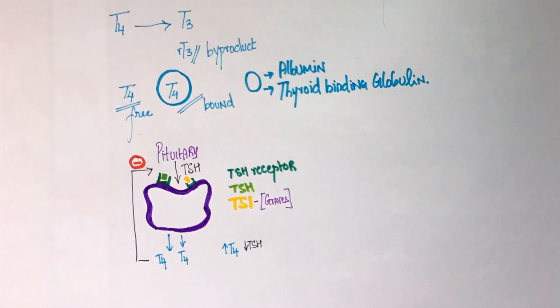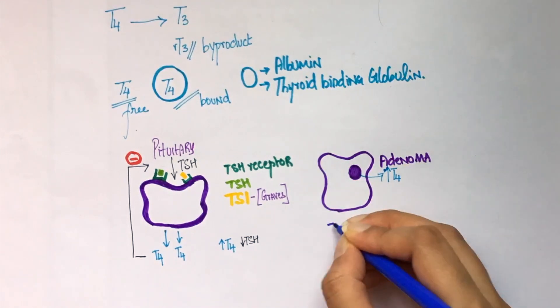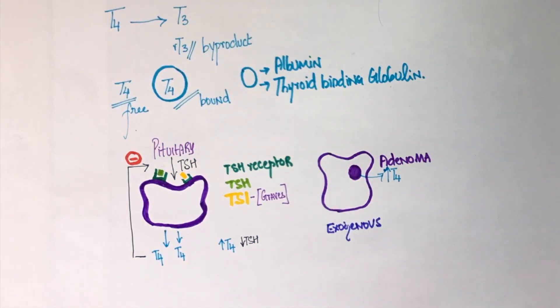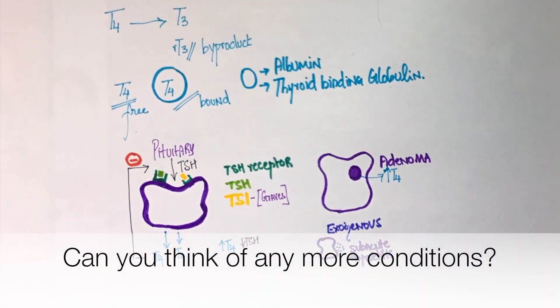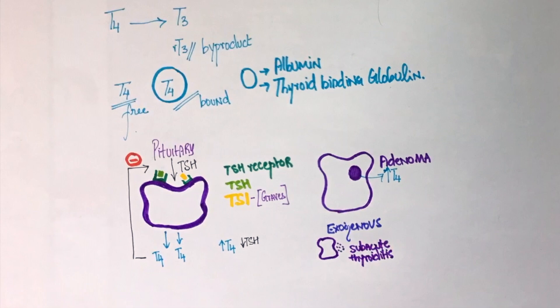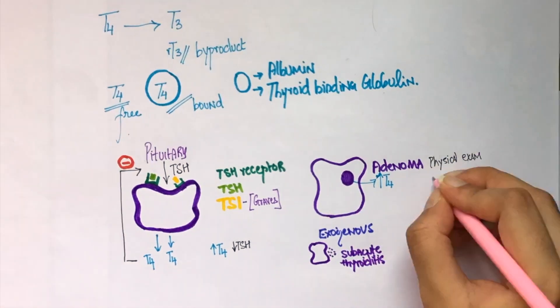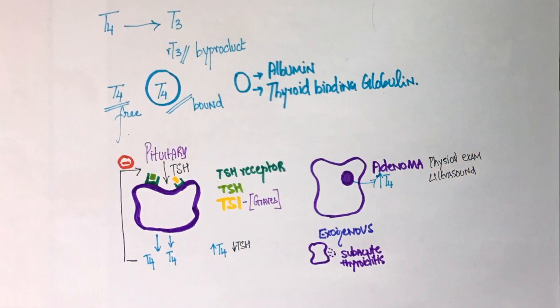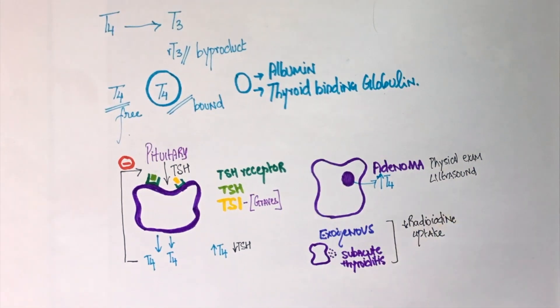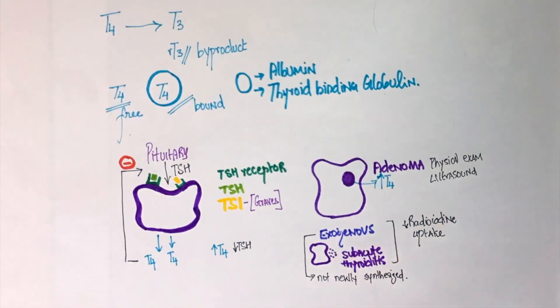Similar labs are seen in functional thyroid adenoma, exogenous administration of thyroid hormone and transiently in subacute thyroiditis. Functional thyroid adenoma can be felt as a mass on physical exam and can be seen on ultrasound. In case of exogenous thyroid hormone administration and subacute thyroiditis, radioiodine uptake will be low. This is because thyroid hormone is not synthesized by the gland in these two diseases.